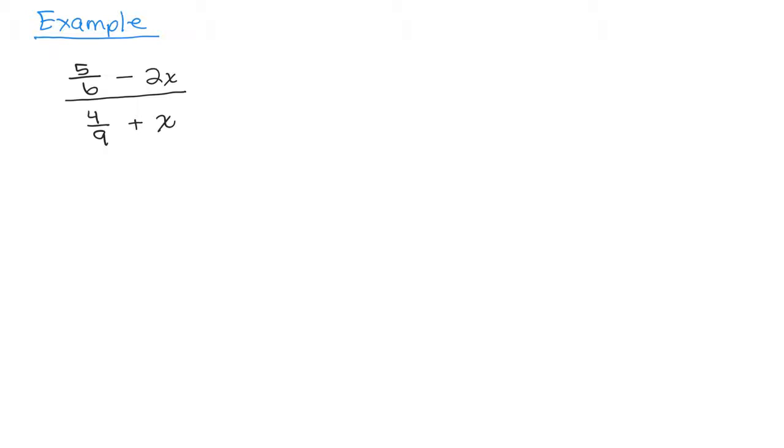So in the denominators, there's a six in the numerator and there's a nine for the four ninths in the denominator. So 18 is the least common multiple of six and nine. So what we want to do is multiply the entire numerator by 18 and the entire denominator by 18. In other words, we're making an equivalent fraction by multiplying by one, 18 over 18.